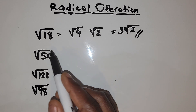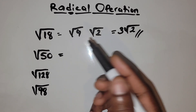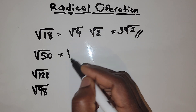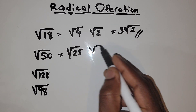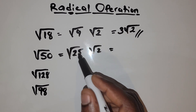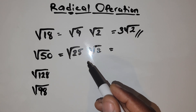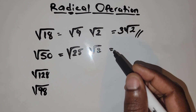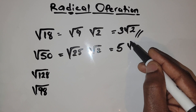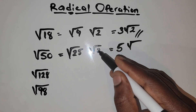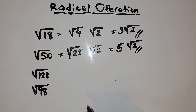What two numbers can we multiply to get 50? We have 25 times 2, which is 50. But 25 can still be simplified — we can find a perfect square for 25, which is 5, because 5 times 5 is 25. So the answer is 5 times the square root of 2.